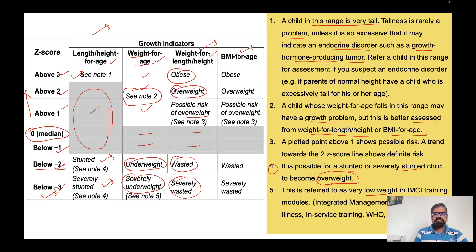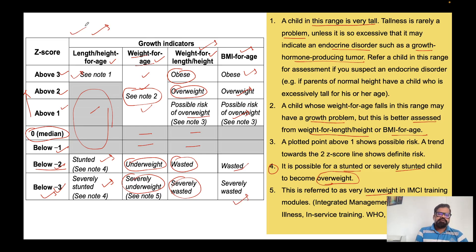The last indicator is BMI-for-age. We calculate BMI as weight in kilograms divided by height in meters squared. When plotting BMI against age: above three z-score is obese, above two is overweight, and below minus three is severely wasting. This table must always be checked whenever you are interpreting stunting, wasting, underweight, and related conditions.